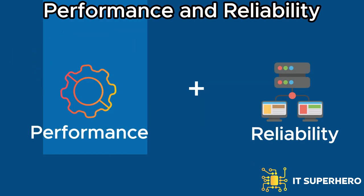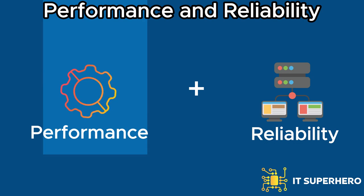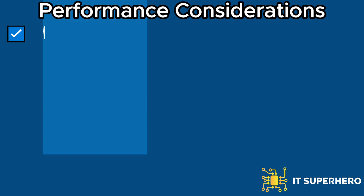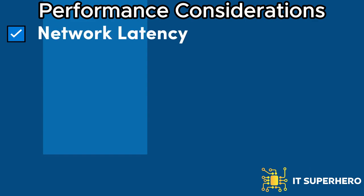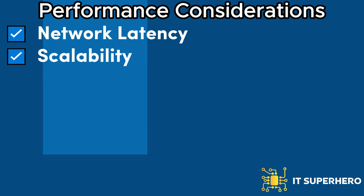Performance and reliability: we'll discuss performance and reliability considerations, covering factors like network latency, bandwidth limitations, and service-level agreements, as well as strategies for optimizing performance and ensuring high availability. Network latency: the distance between the user and the cloud data center can impact response time; minimizing network latency is important to ensure optimal performance. Scalability: cloud services offer the ability to scale resources up or down based on demand, which is essential to handle varying workloads efficiently.